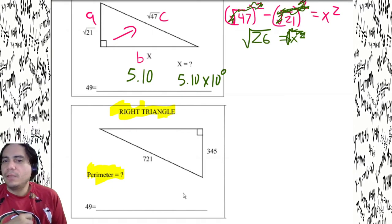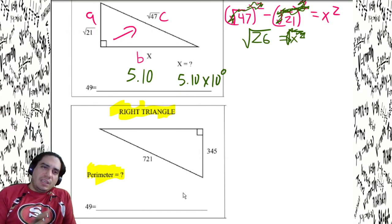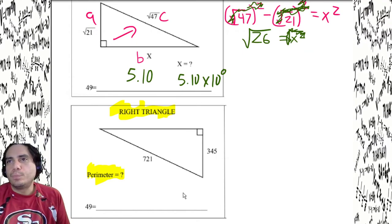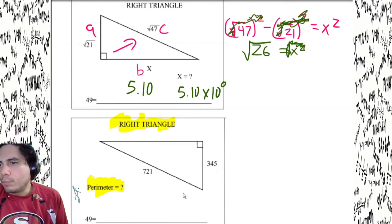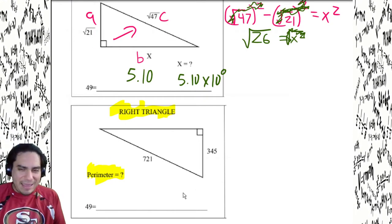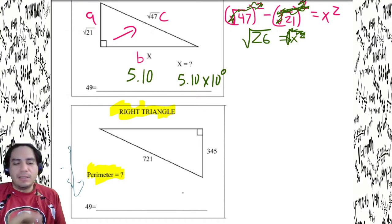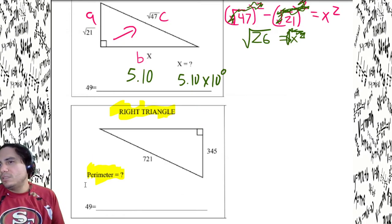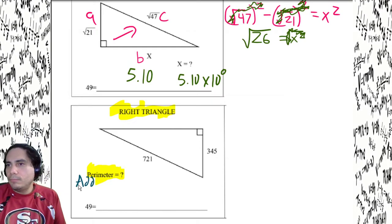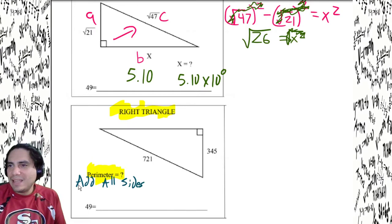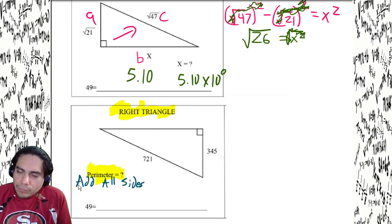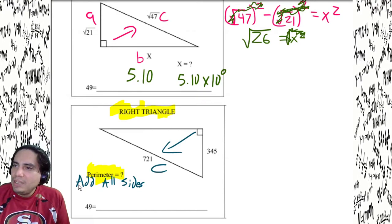Now we have a perimeter problem for a right triangle. Perimeter is super easy — don't confuse it with area. There is just one thing you have to do for perimeter: add all sides. But we don't have all the sides yet. We have to find the missing side using the Pythagorean theorem. We've got c and one leg, so the other leg is missing.